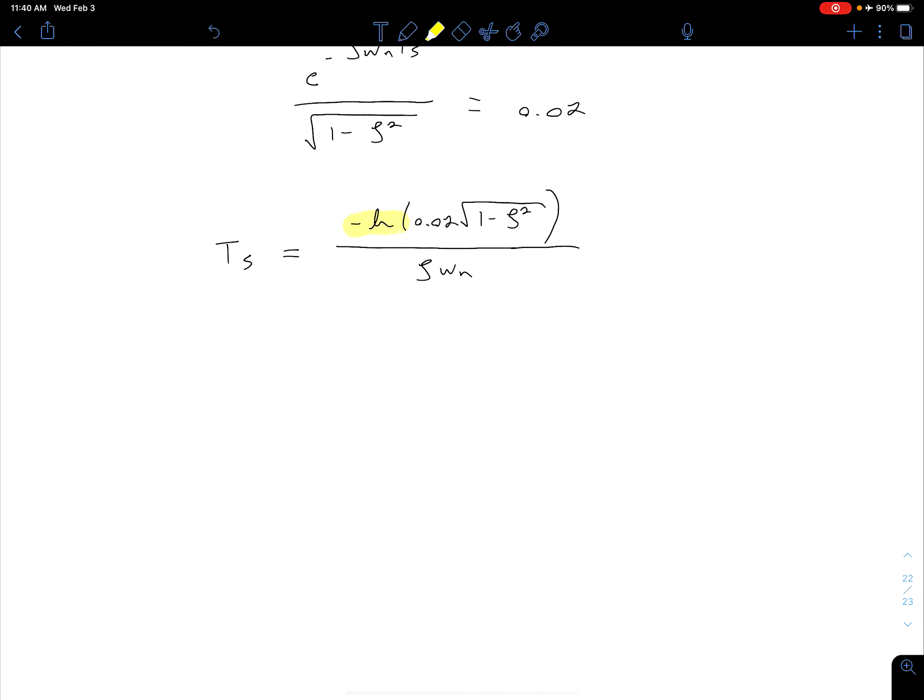It can be shown just by plugging in values of zeta that this numerator can vary between about 3.9 and 4.7. So we can just say, let's have a rough approximation that our settling time is 4 divided by zeta omega n. So oftentimes we'll just use this approximation. But of course, if you want to have a little more precision, you could also use this equation too.